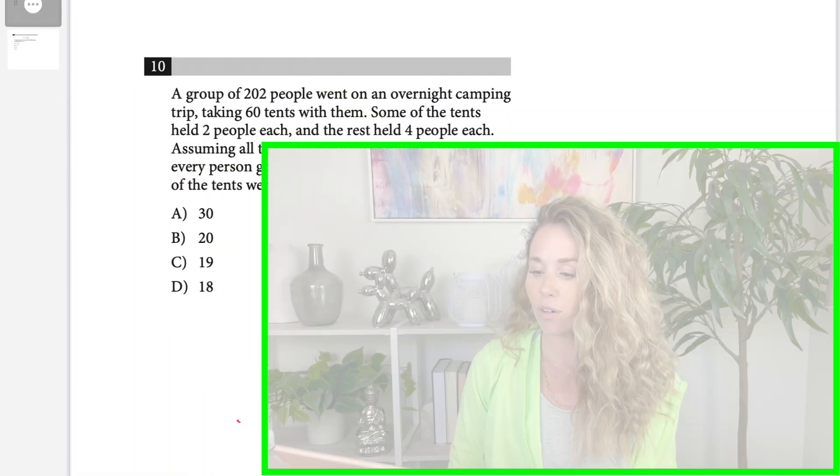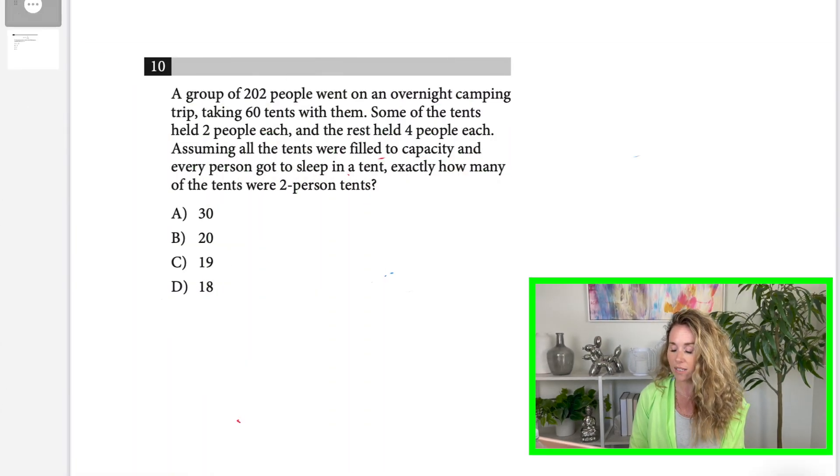I'm going to read this word problem. A group of 202 people went on an overnight camping trip taking 60 tents with them. Some of the tents held two people each and the rest held four people each. Assuming all the tents were filled to capacity and every person got to sleep in a tent, exactly how many of the tents were two-person tents?